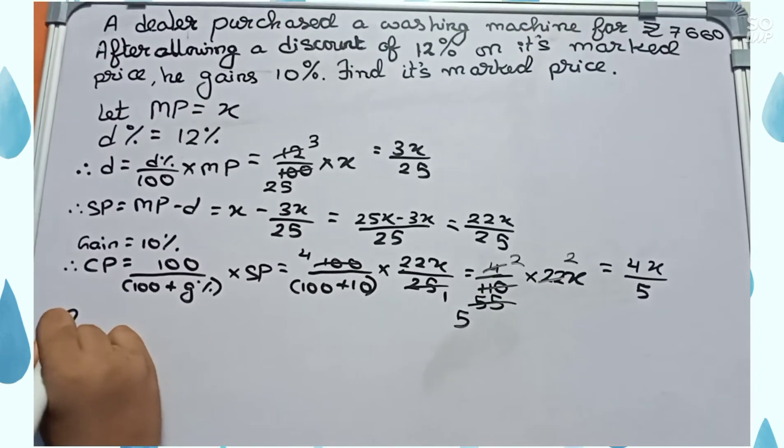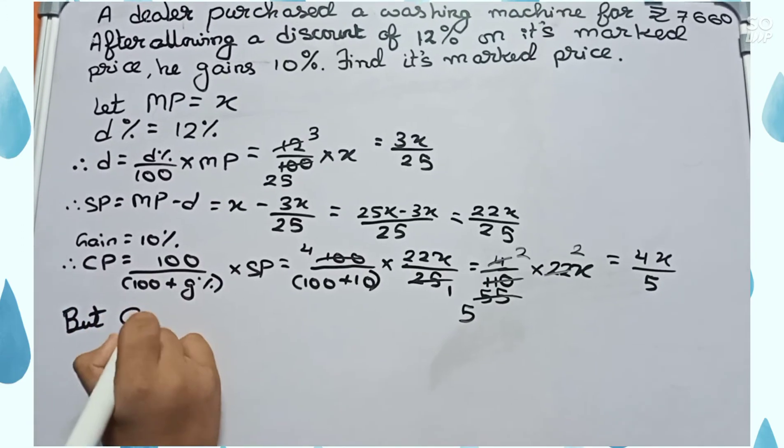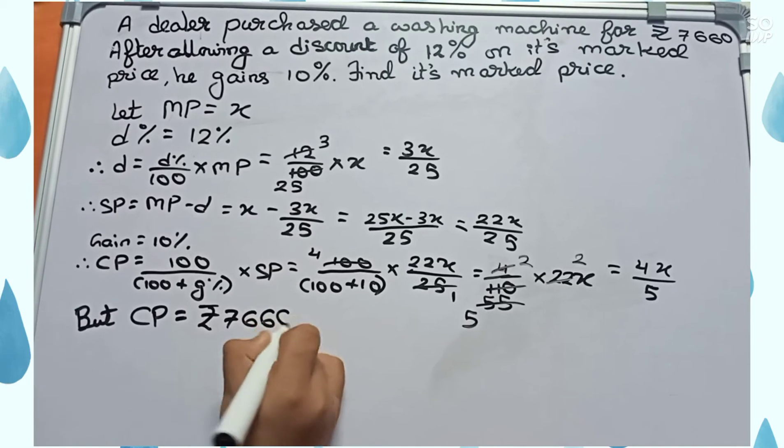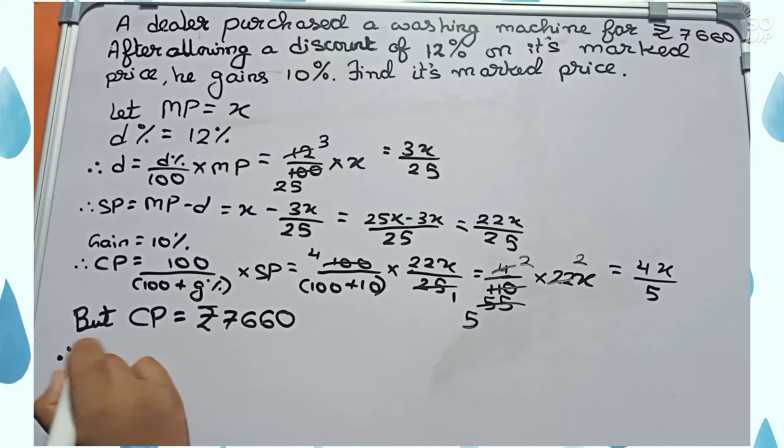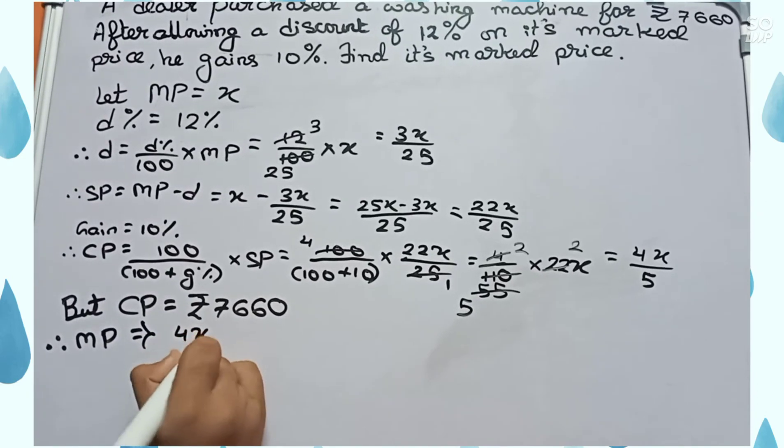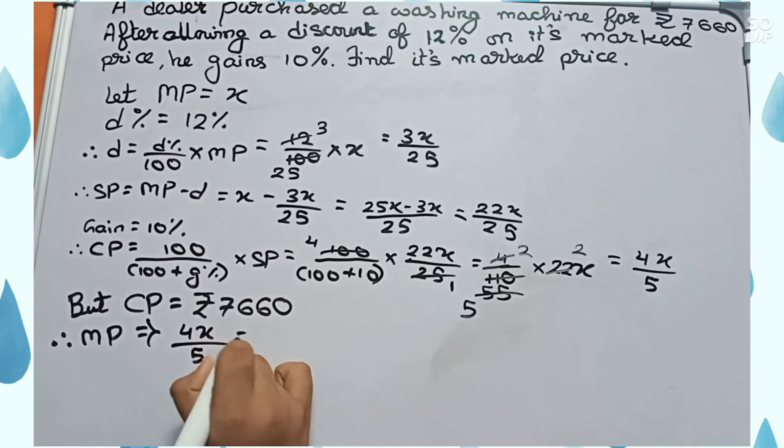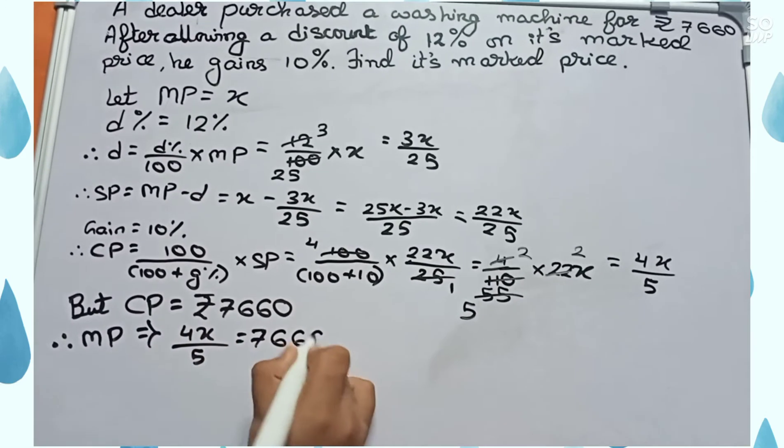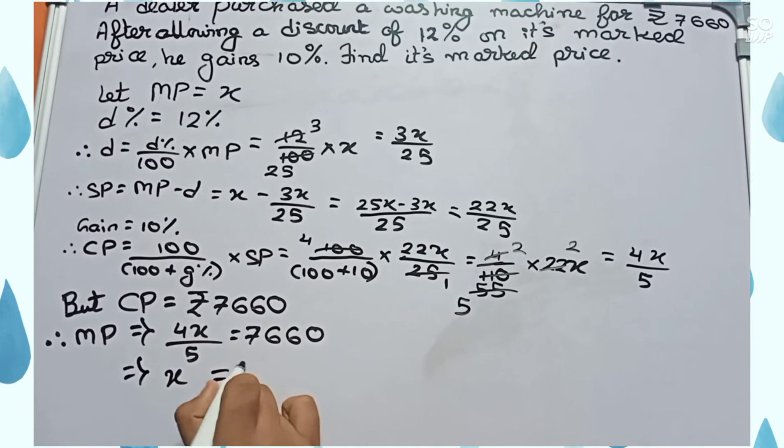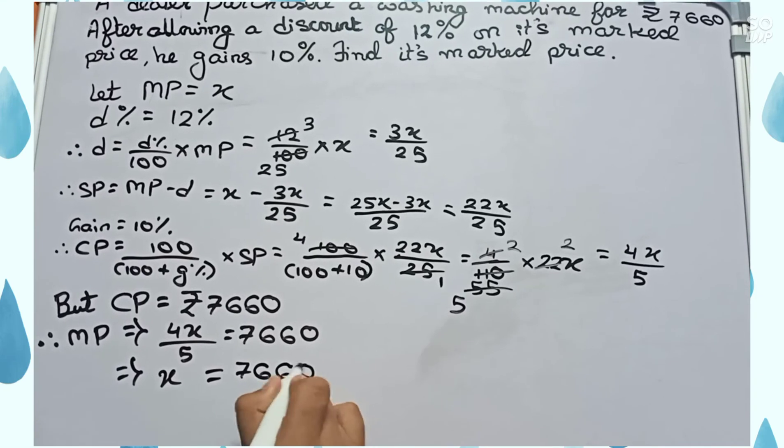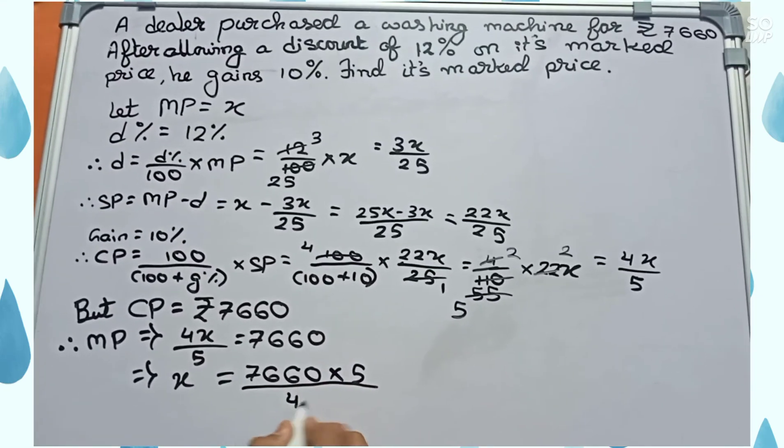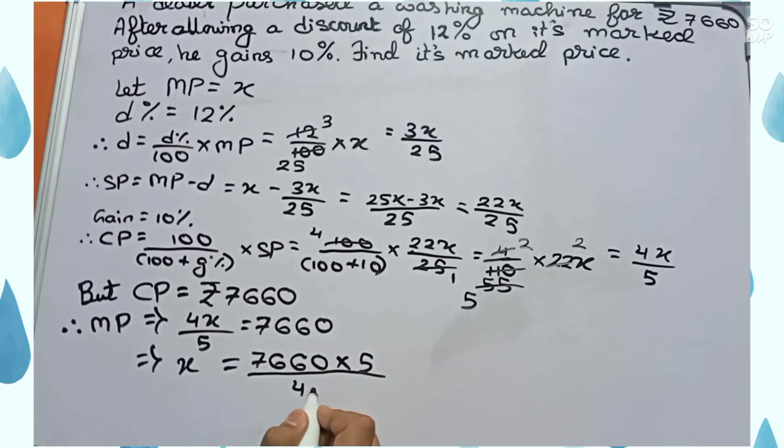But in the question, the CP is given. So we will write: But CP equals rupees 7660. Therefore, MP equals 4x by 5 equals 7660. So x equals 7660 into 5 by 4.